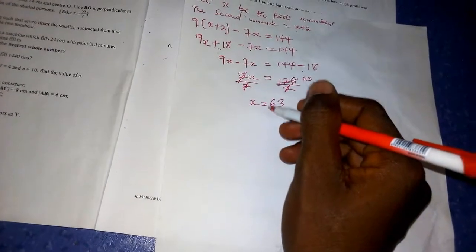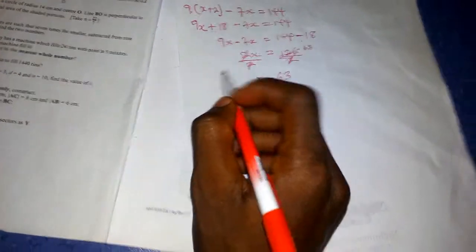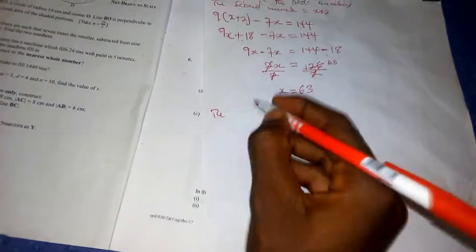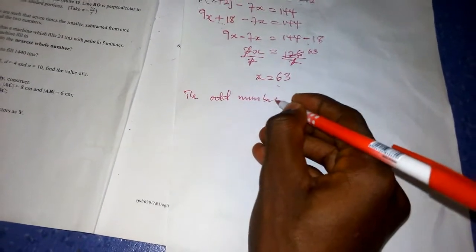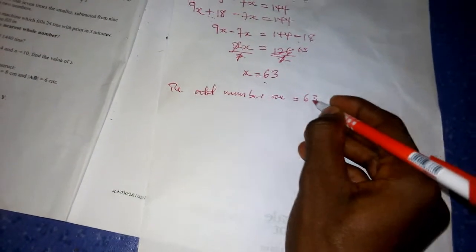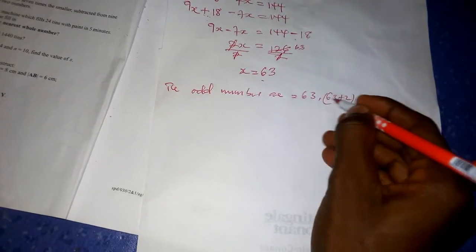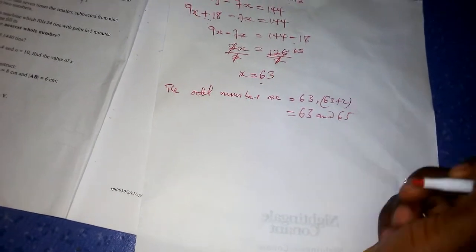So the second one is 63 plus 2. So the odd numbers equal 63 and 63 plus 2, which equals 63 and 65. That is all.